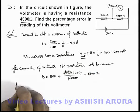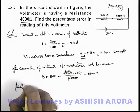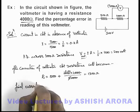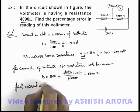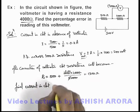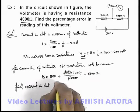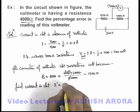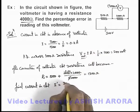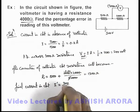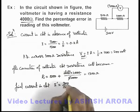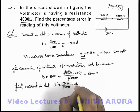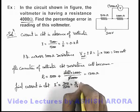We can now calculate the new current in the circuit after the voltmeter is connected. The new current I' = EMF / total resistance = 300 / 1300, which equals 3/13 amperes.